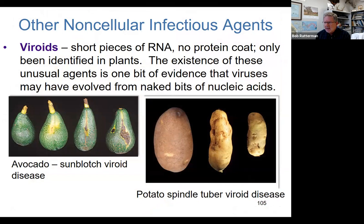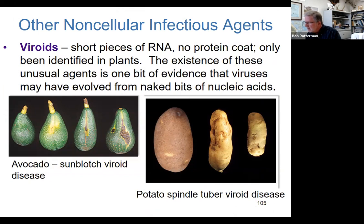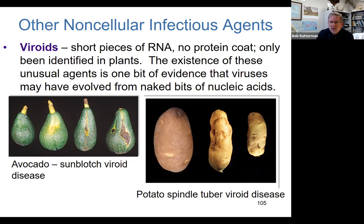Viroids — this impacts plants. It's a small, infectious piece of RNA. We make very brief mention of these other agents called viroids. And that was the end of chapter six. Any questions on six?